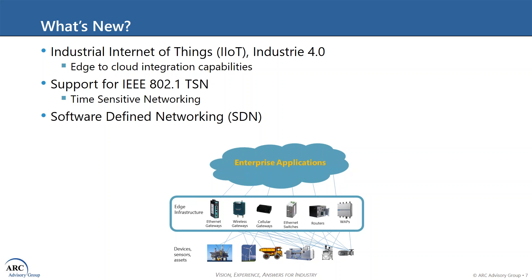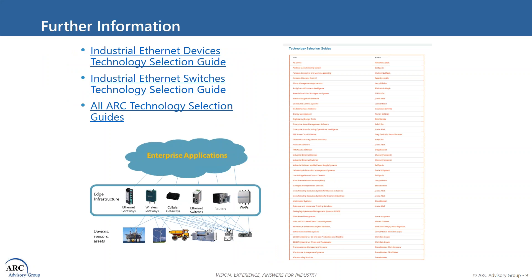Great. I can appreciate how these new developments are important factors that need to be taken into consideration in selecting Industrial Ethernet Devices and Switches. So thank you, Chantelle, for your explanation of the Industrial Ethernet Devices and Switches selection guides. I want to also thank the listener for their interest in these topics. If you want more information, please go to the ARC website at www.arcweb.com. Click on Products and Services and then Technology Selection Guides. You will see links to further descriptions of these two selection guides as well as many others.